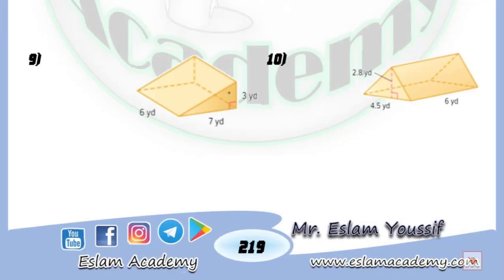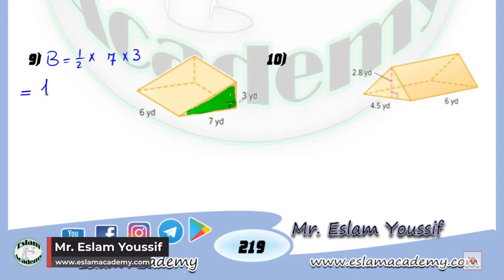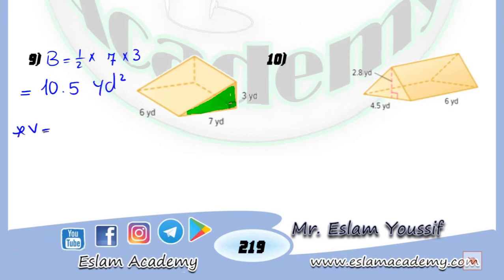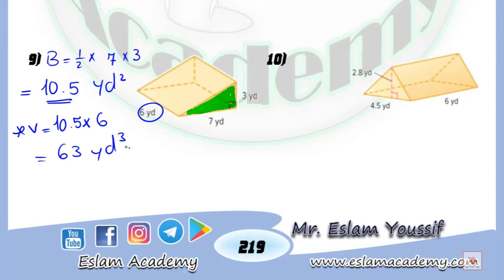In question number 9, by the same method, the volume equals the area of the base multiplied by the height. The base is a triangle, so the area equals one-half times base times height — one-half times 7 times 3, equaling 10.5 square units. Then the volume equals 10.5 multiplied by the height of the prism, which is 6, giving 63 cubic units. And that's how we find the volume of rectangular and triangular prisms.